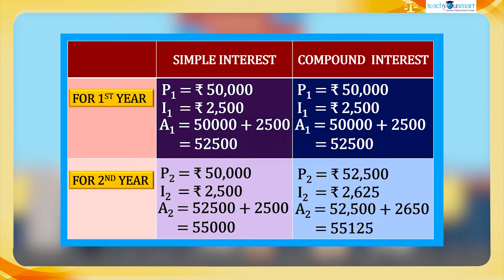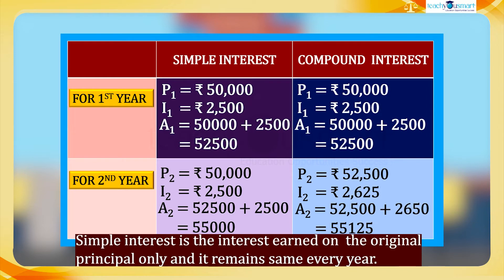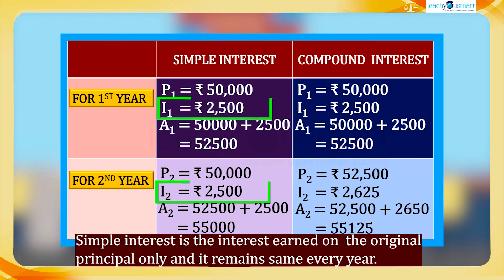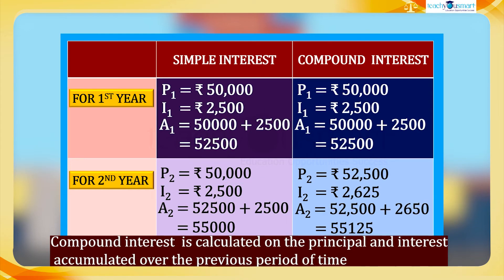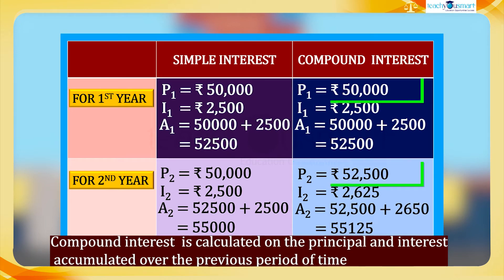From these calculations it is clear that simple interest is the interest earned on the original principal only and it remains the same every year. But compound interest is the interest on interest, calculated on the principal and interest accumulated over the previous period of time.